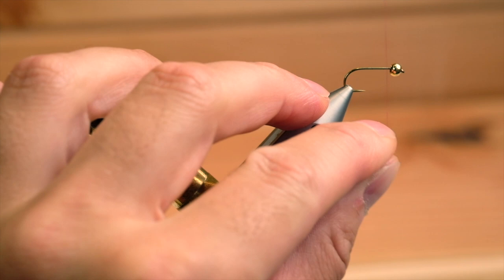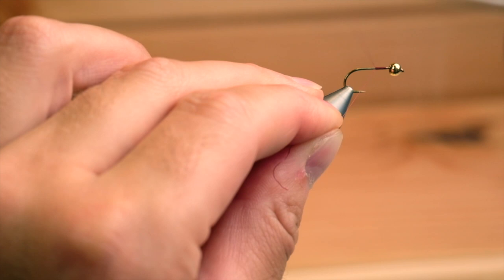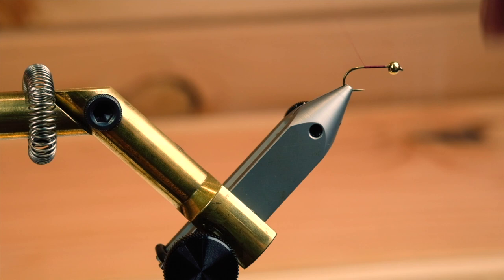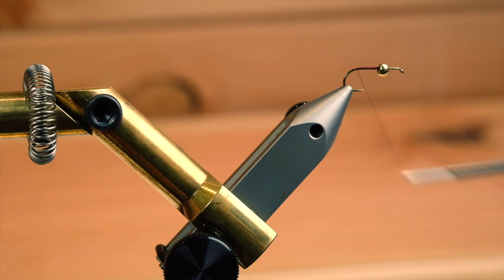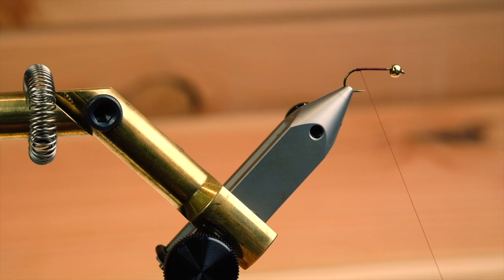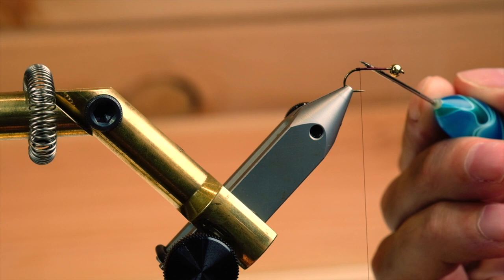Attach the tying thread to the back and trim off the waste. Advance to the back right before the bend and create a little bump with tying thread, a little notch. Put a half hitch on there, secure it, and add a little drop of varnish to reinforce that little bump.